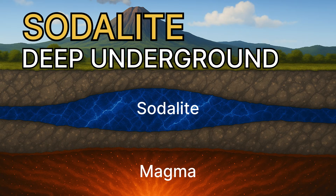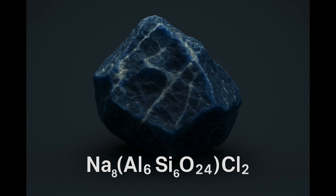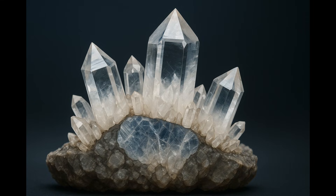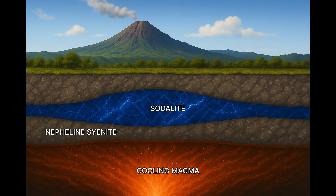From shallow volcanic cavities, we now move deep underground. Sodalite forms miles below the surface where hot alkaline magma cools slowly under intense pressure, but the chemistry has to be just right. The magma must be low in silica and rich in sodium — if silica were higher, quartz and feldspar would dominate and sodalite would never form. As the magma cools, sodalite grows in veins and pockets within coarse-grained igneous rock.